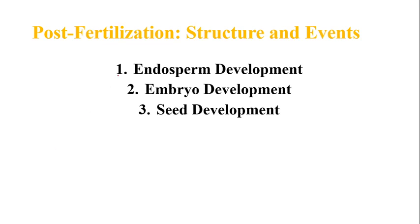Development takes place by three processes. First, the endosperm will develop, then the embryo will develop, and after that the seeds will develop. Endosperm development always comes before embryo development because the embryo requires reserved food material for its growth and development, which is provided by the endosperm.